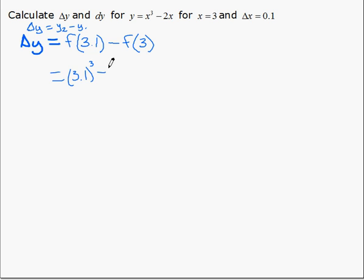3.1 cubed minus 2 times 3.1, minus - and make sure you have this extra set of brackets really, to make sure you remember to distribute your negative sign. So this is 3 cubed minus 2 times 3.